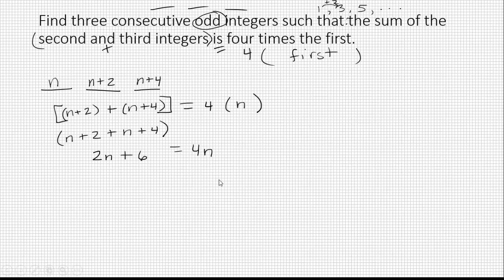On the other side, I've just got four n. Now to solve this equation, I'm going to subtract two n from both sides. Okay, that's zero. So six is equal to two n. I can divide by two. So n equals three.